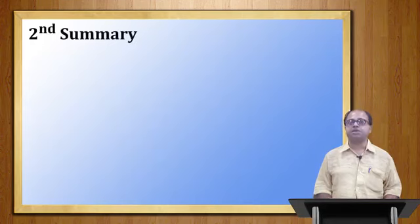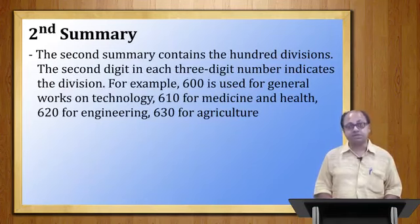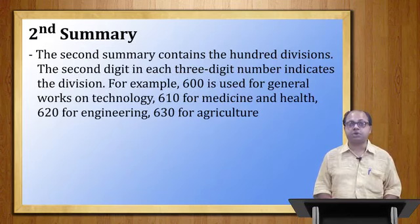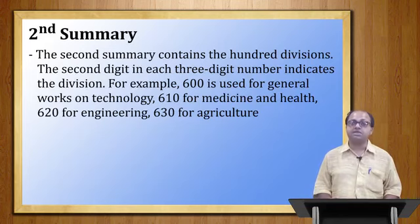The second summary contains the 100 divisions. The second digit in each three-digit number indicates the division. For example, 600 is used for general works on Technology; 610 for Medicine and Health; 620 for Engineering; 630 for Agriculture. So after 6, the digit 1 indicates Medical Science, 2 indicates Engineering Science, and 3 indicates Agricultural Science within the Technology class.